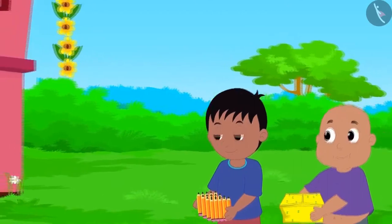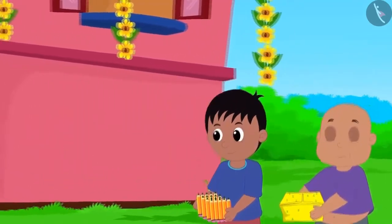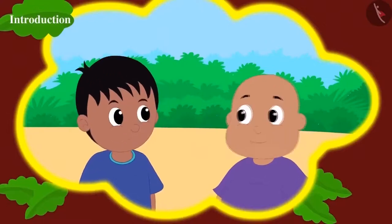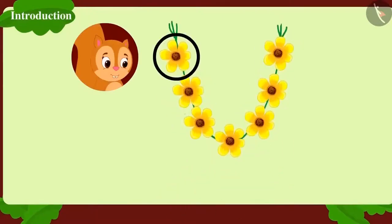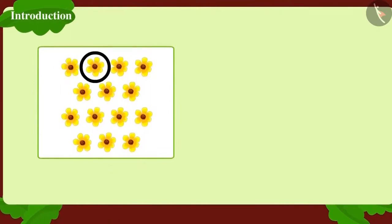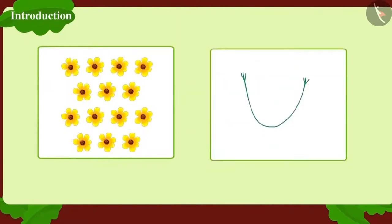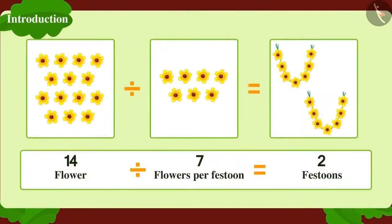Raju and Bablu decided to buy festoons to decorate Jeev's flying saucer. Chanda makes each festoon with a bunch of 7 flowers. With 14 flowers, how many festoons can they buy? If we divide 14 flowers into festoons of 7 flowers each, we get 2 festoons.